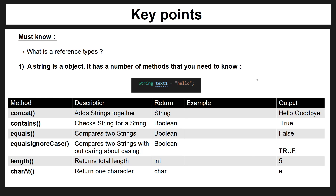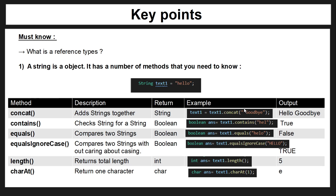The first method is the concat method. It combines two strings together, so if you have the original string in text1 and you add concat, you can then add the string within the brackets to your original variable. In this case it returns a string, and so the output would be "hello goodbye".